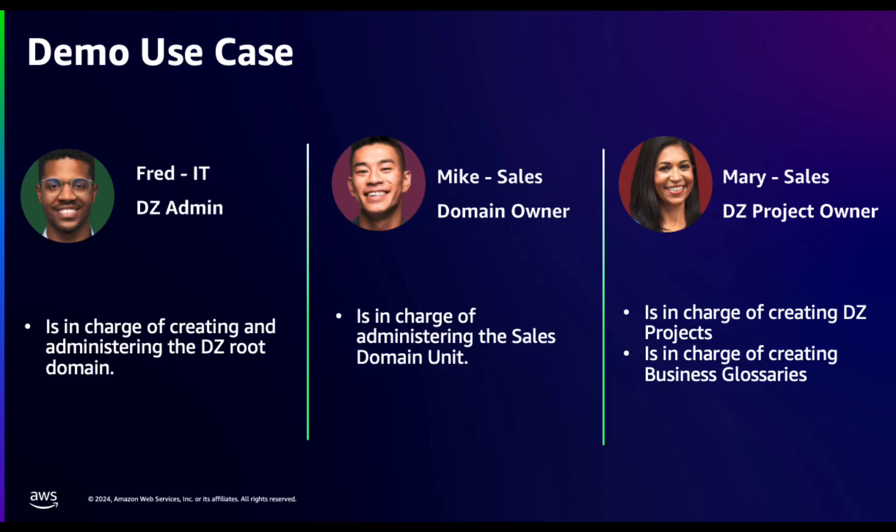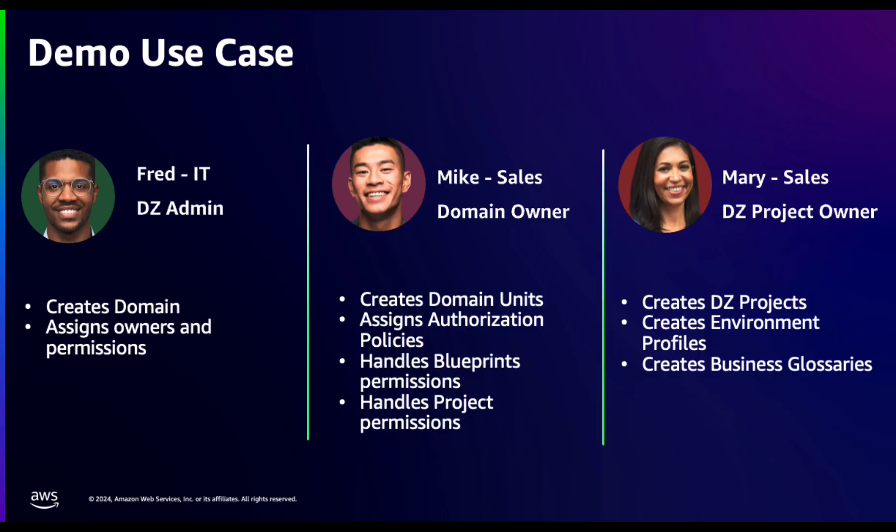This is our demo use case. We have three different personas. We have Fred — he works for IT, he's the DataZone admin, he is in charge of creating and administering the DataZone root domain. We have Mike — he works for sales, he is the domain owner, he is in charge of administering the sales domain units. And then we have Mary — Mary also works for sales but she is the DataZone project owner. She is in charge of creating DataZone projects and also creating business glossaries.